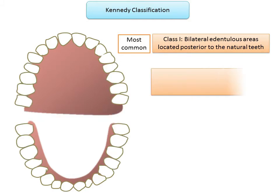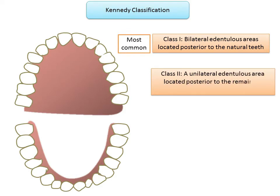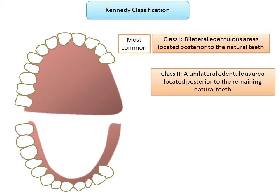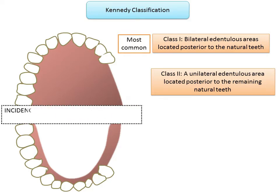Class 2 refers to a unilateral edentulous area located posterior to the remaining natural teeth — a single edentulous area in the posterior region without any teeth posterior to it. The difference between Class 2 and Class 1 is that Class 2 is unilateral whereas Class 1 is bilateral, but both are distal free-end edentulous spaces. According to Stratton, the incidence in the maxilla is about 30 percent and in the mandible 25 percent.